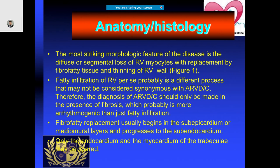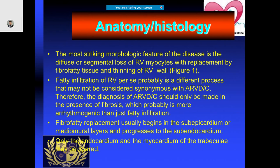Coming to the anatomy, in a special segment there may be loss of RV myocytes, and they get replaced by fibro-fatty tissue with thinning of the RV wall. There is also fatty infiltration of the right ventricle, which may sometimes not be seen in some patients. Therefore, while trying to make a diagnosis of ARVD, you should look for the presence of fibrosis, which is more arrhythmogenic compared to fatty infiltration. The fibro-fatty replacement usually begins in the sub-epicardium or midmural layers, progressing to the sub-endocardium, while the endocardium and trabecular myocardium may be spared.